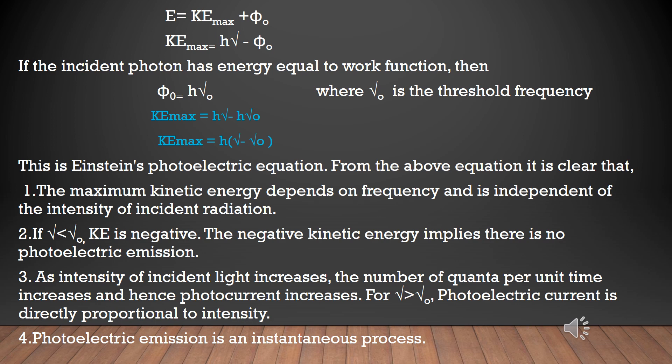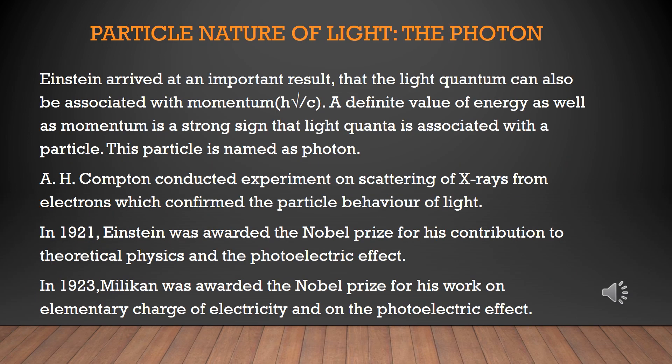One photon incident on the metal — one electron is ejected. So photoelectric emission is an instantaneous process. Einstein arrived at an important result that a light quantum can also be associated with momentum. A definite value of energy as well as momentum is an indication that light quanta are associated with a particle. That particle was named as photon. Later, Compton conducted experiments on scattering of X-rays from electrons, which confirmed the particle behavior of light.